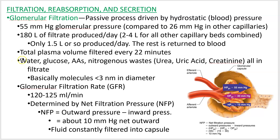The stuff that filters out — this is what leaks into the capsular space. It comes in through the afferent arteriole; there are pressure differences here, net pressure outward, and that fluid goes down the tube. These are really small molecules — they must be less than three nanometers in diameter. A nanometer is 1/1000th of a micrometer, which is 1/1000th of a millimeter, which is 1/1000th of a meter — these are the units you measure light waves in.